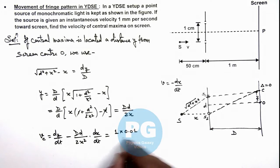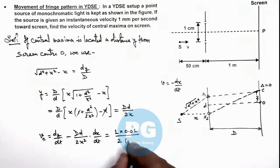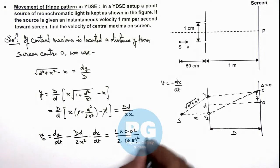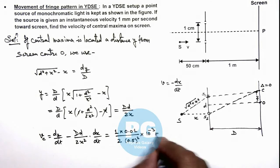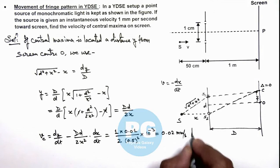Divided by twice of x squared - the value of x is 0.5 - multiplied by 1 millimeter per second, which is 10 to the power minus 3. On simplifying, this is giving us 0.02 millimeter per second. That is the result of this problem.